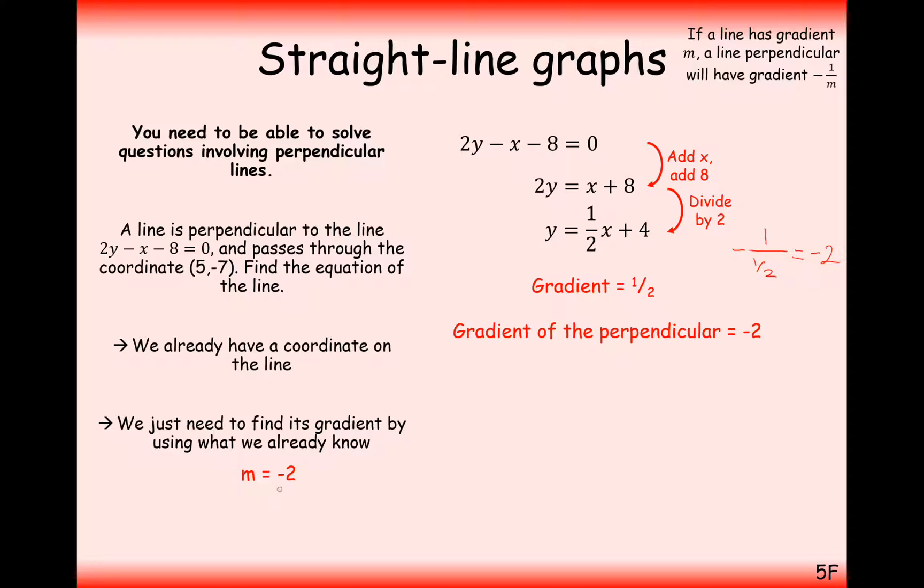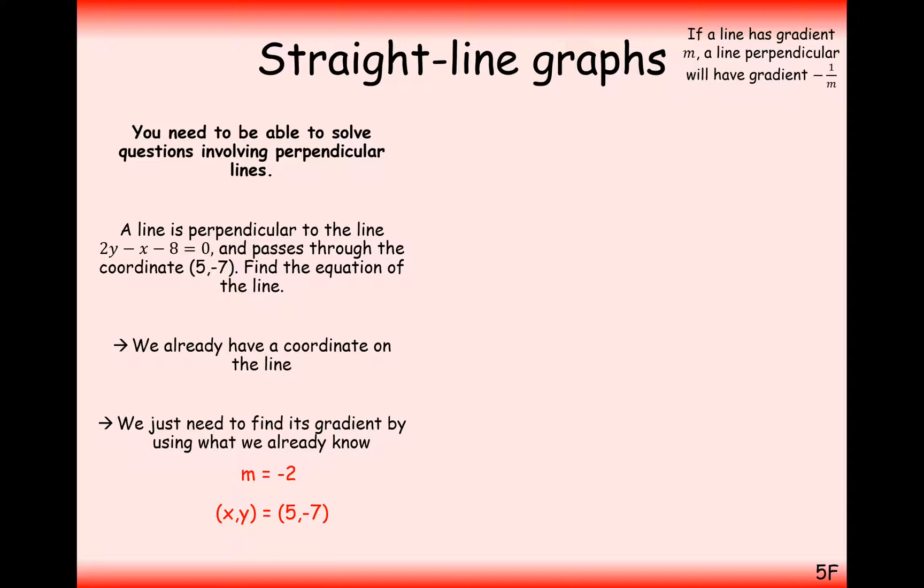Given that I know my gradient and I know a coordinate that intersects the line, then I can just use x as the value 5 and y as the value 7. So using y equals mx plus c, substitute these values in, work out what c needs to be.